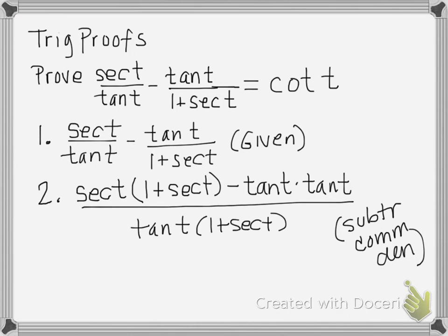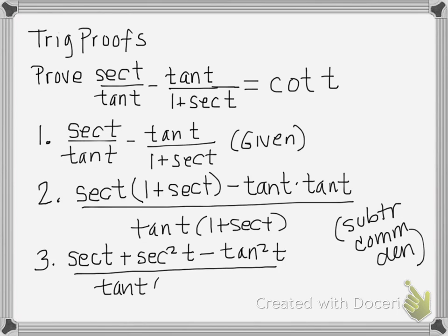The third step here—I'm going to go ahead and expand and simplify. So I'm going to have, well, there won't be anything to simplify, so I'm just going to expand this: secant t plus secant squared t minus tangent squared t over tangent t times one plus secant t. And you can see that this is just no different than when we simplified the expression.